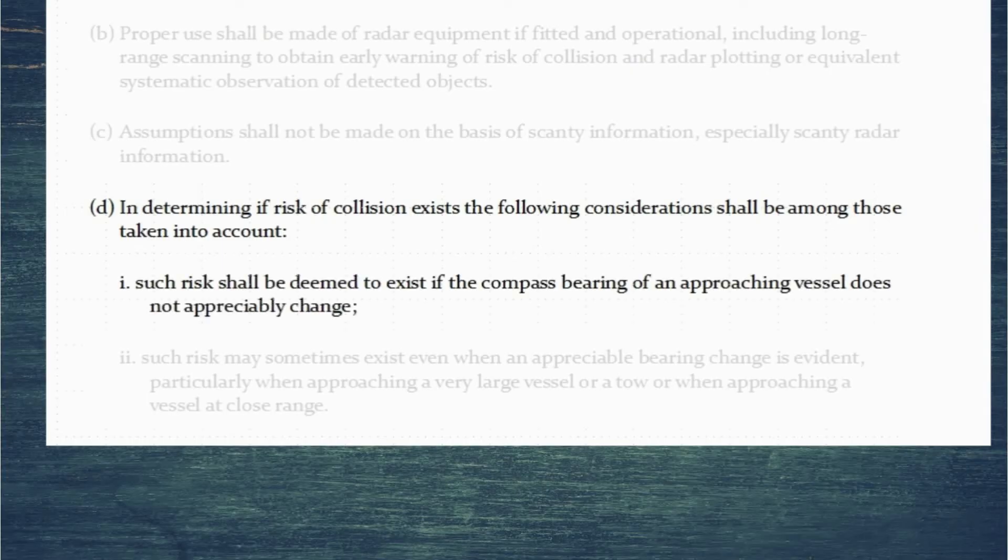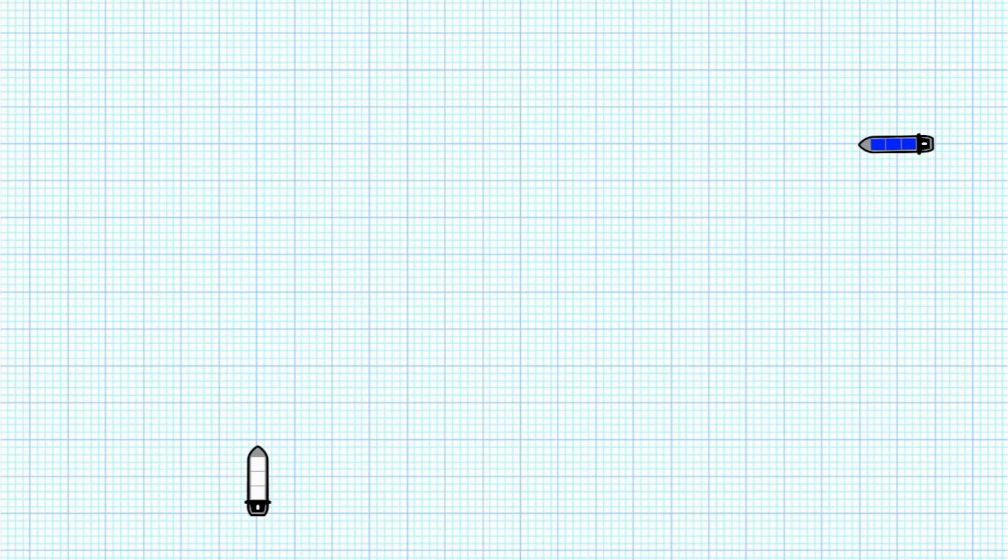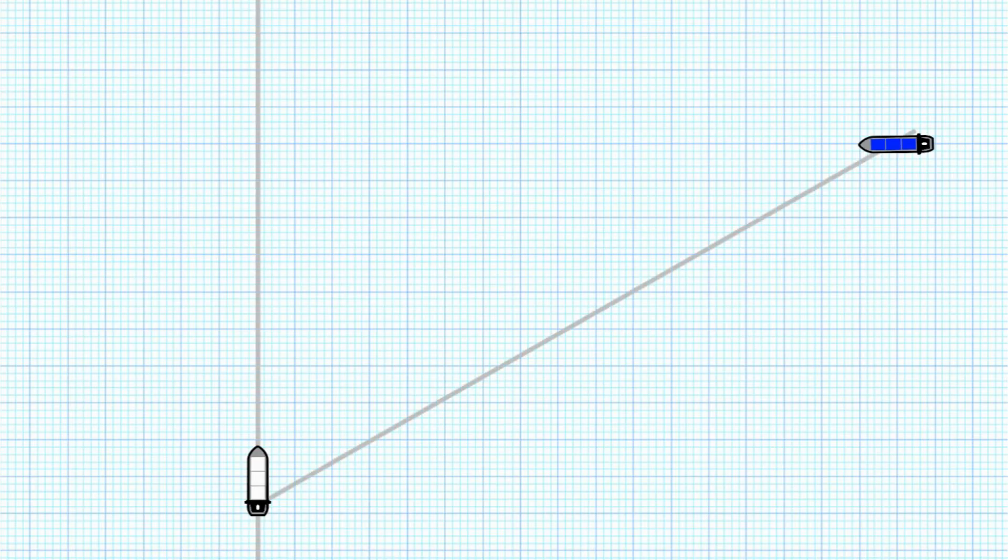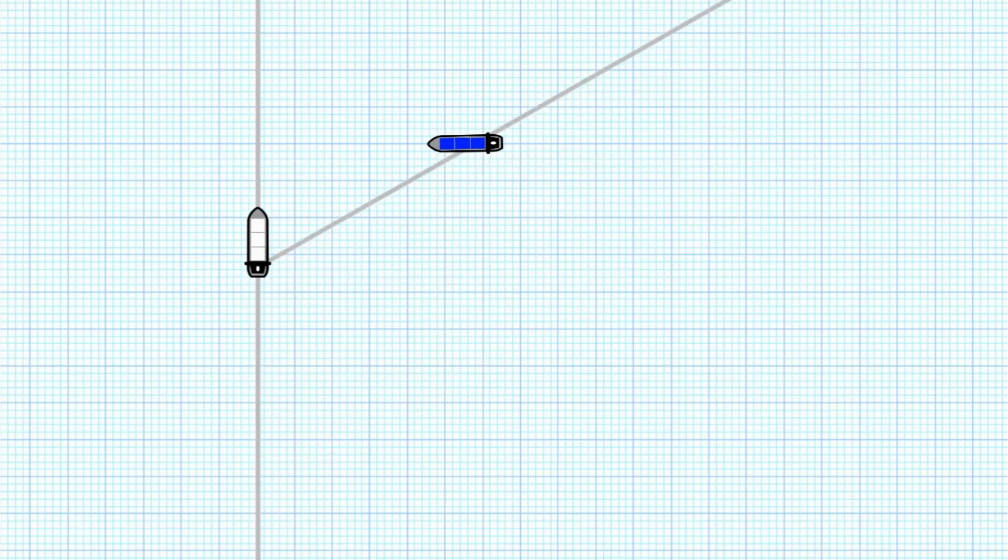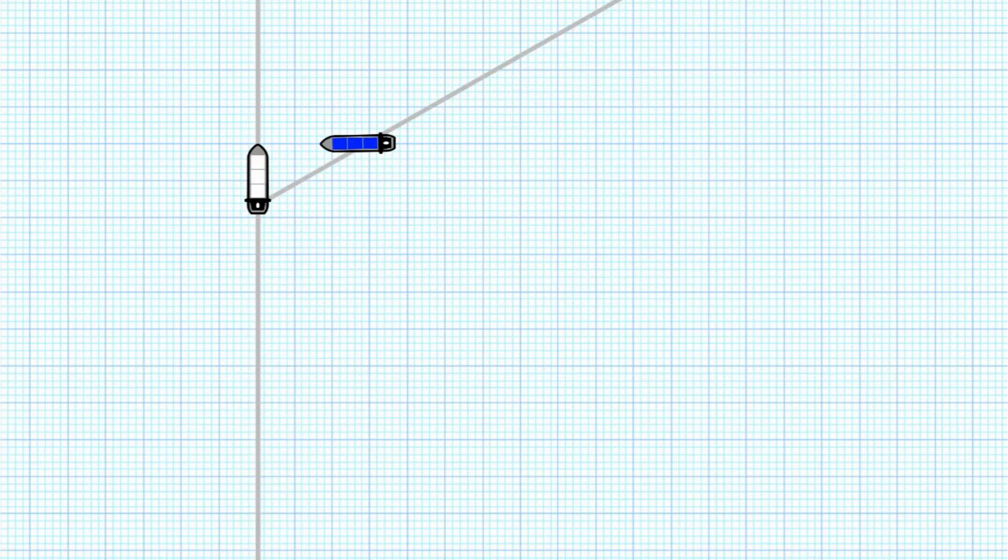Such risks shall be deemed to exist if the compass bearing of an approaching vessel does not appreciably change. What we mean by this is if we put ourselves on the white vessel, and we are going to observe the blue vessel, we need to take a bearing of the other vessel. Now we take the bearing as the difference between our heading line and the bearing of the vessel, and we need to continue to monitor that as we approach each other. Clearly in this case, that bearing is not changing. The vessel stays going down that same constant bearing, which means risk of collision exists.